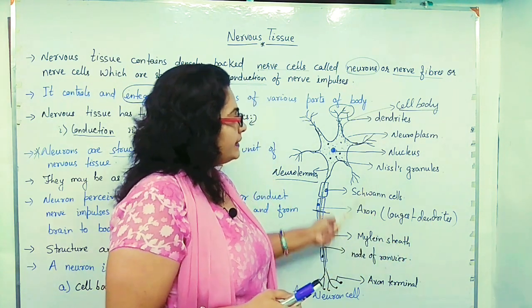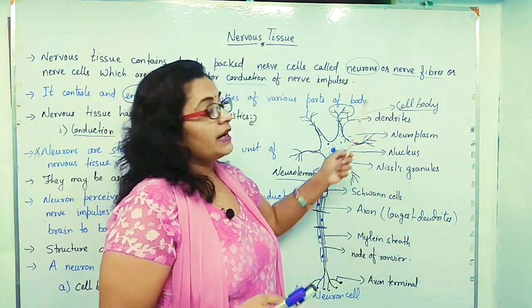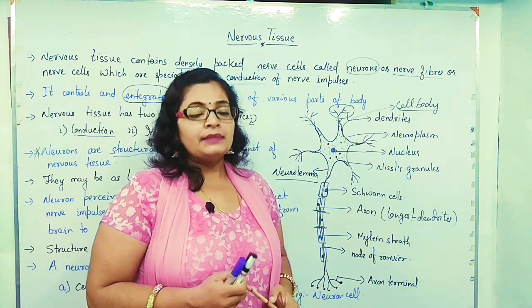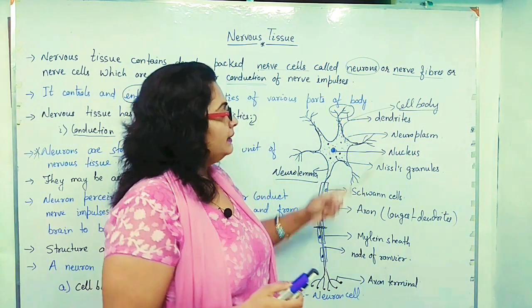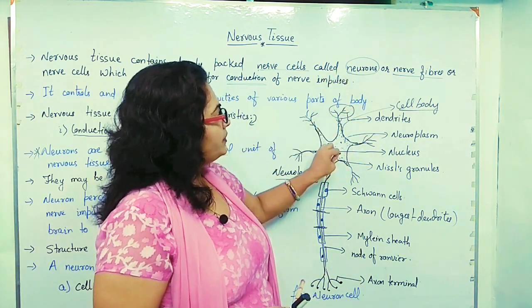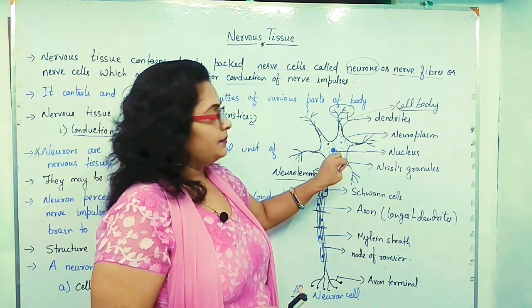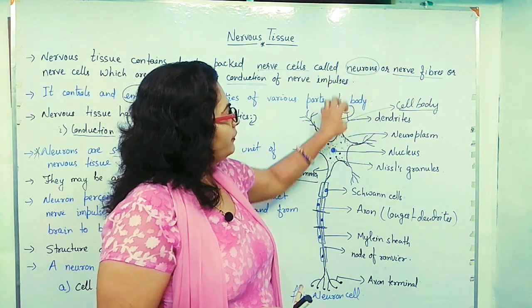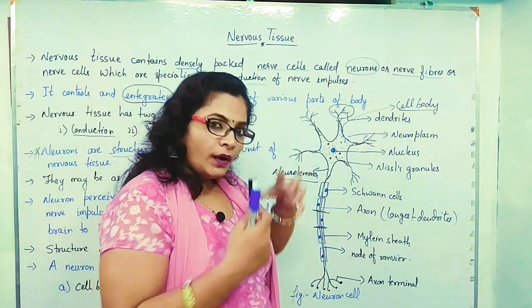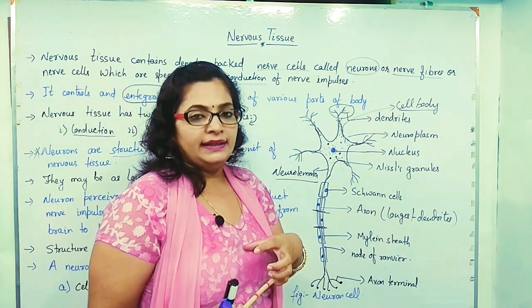The dendrites conduct nerve impulses towards the cell body. The dendrites carry nerve impulses toward the cell body.